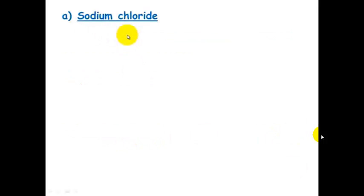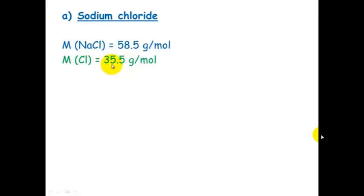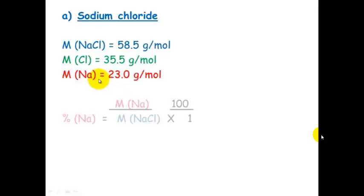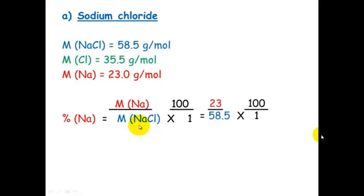Sodium chloride: the total molar mass is 58.5, because chlorine's is 35.5 and sodium is 23.0. To work out the percentage of sodium, we take the molar mass of sodium, which is 23, divided by the total molar mass of sodium chloride, which is 58.5. So 23 divided by 58.5 times 100 equals 39.3%.